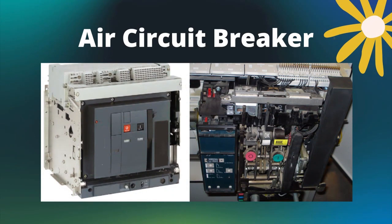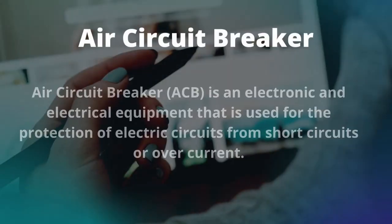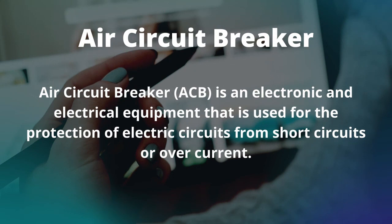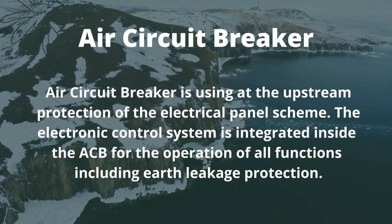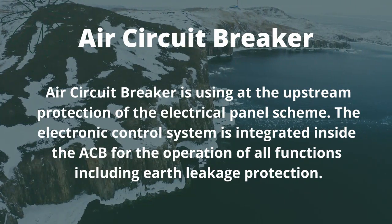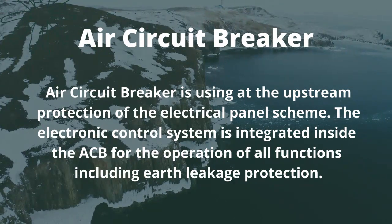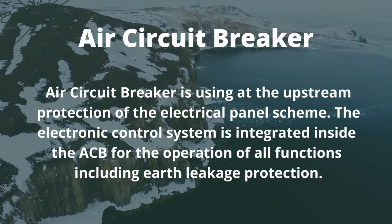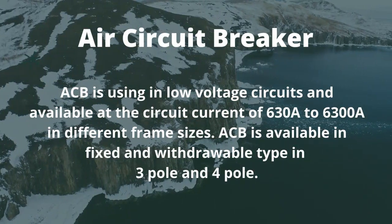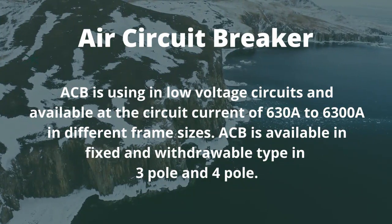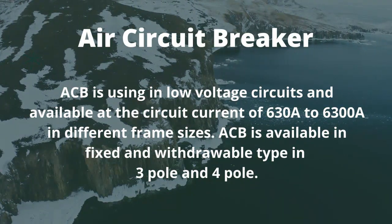Starting with air circuit breakers: an air circuit breaker is electronic and electrical equipment used for the protection of electric circuits from short circuits or overcurrent. It is used at the upstream protection of the electrical panel scheme. The electronic control system is integrated inside the ACB for the operation of all functions including earth leakage protection. ACBs are used in low voltage circuits and are available at circuit currents of 630A to 6300A in different frame sizes.